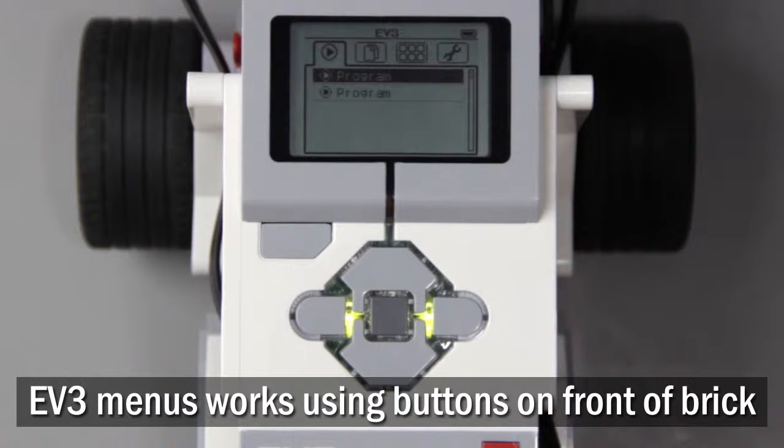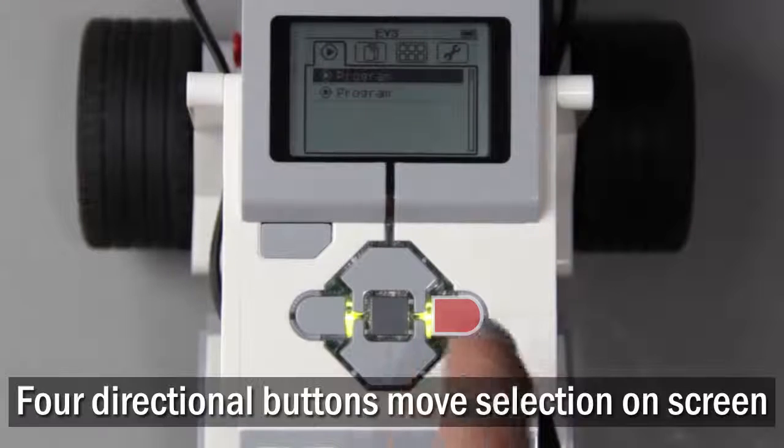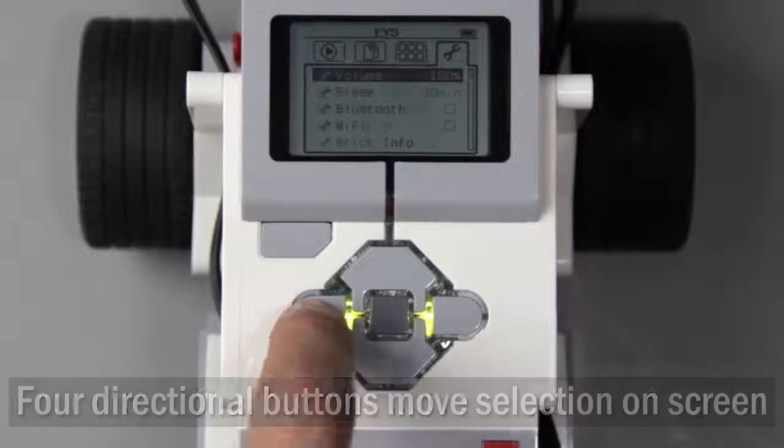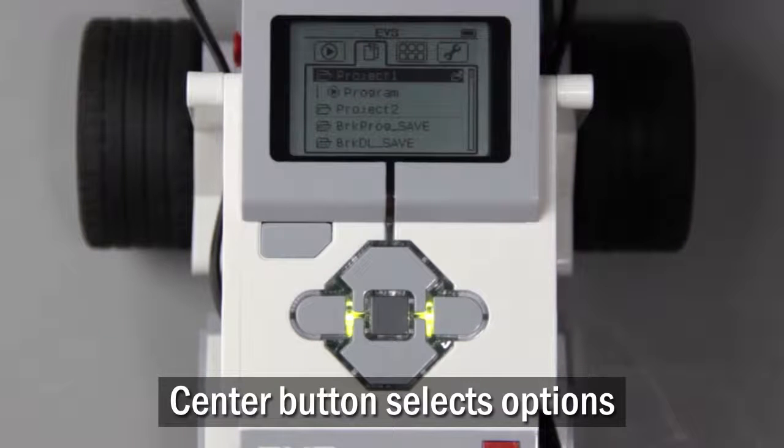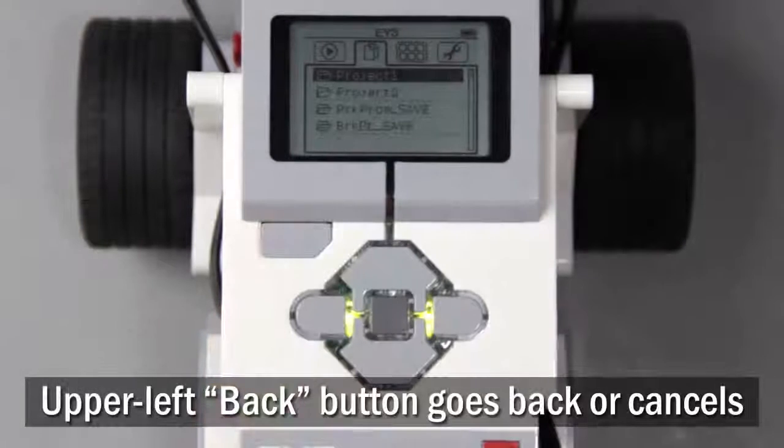The EV3 menu system works using the buttons on the front of the EV3 brick. The four directional buttons move the selection on the screen, the center button selects options, and the back button in the upper left goes back.